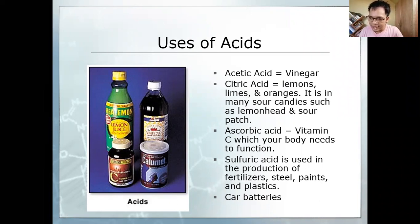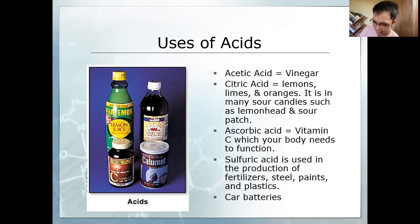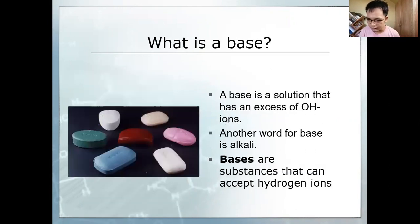The acid responsible for strengthening our immune system is ascorbic acid or vitamin C. Sulfuric acid is used for fertilizer production and car batteries. Other uses of acids include aqua regia to dissolve gold, and etc.